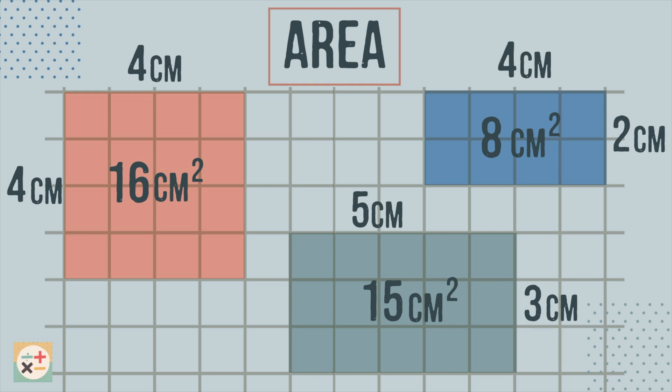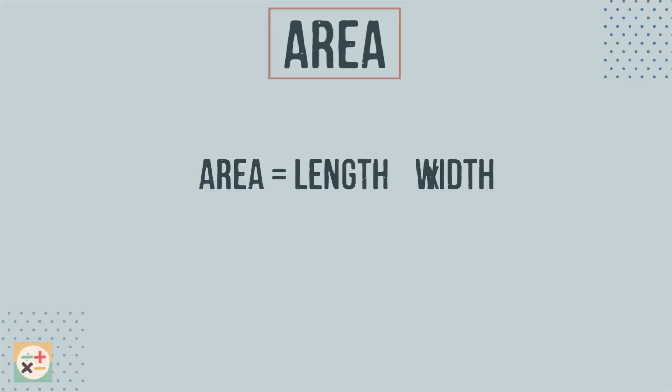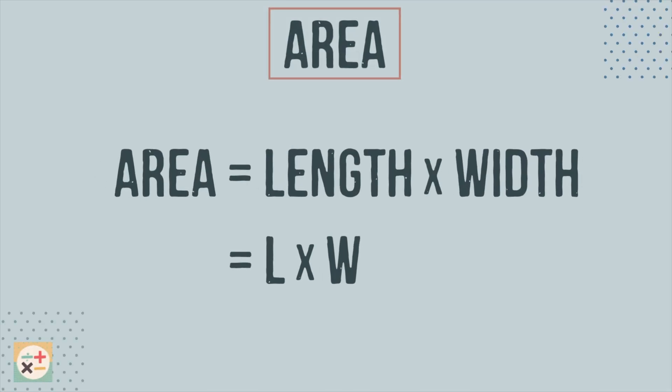Well, the area can be calculated by multiplying the length of a side by the width. Therefore, the formula for finding the area of a square or rectangle is length times width.